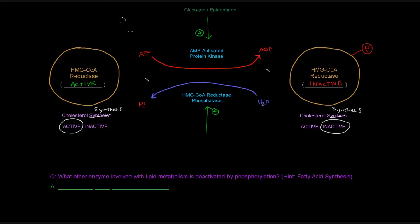Whereas the anabolic hormone insulin will trigger the phosphatase that removes that phosphate and allows the reductase to be active because it's anabolic. We've got an anabolic hormone here in insulin, and then glucagon and epinephrine are catabolic.